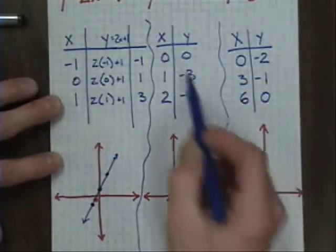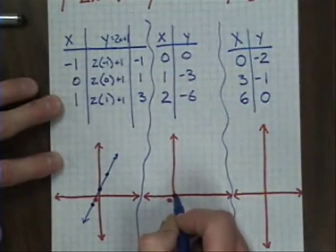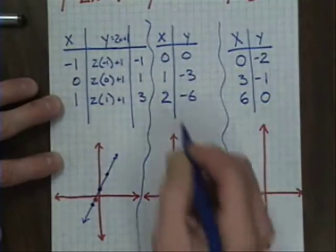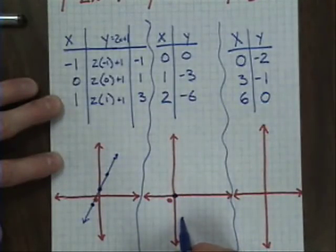The second problem works the same way. 0, 0 is my origin. Put my dot right on the origin itself. 1, negative 3 is 1 over and 3 down. And 2, negative 6 is 2 over and 6 down, which takes me to here.